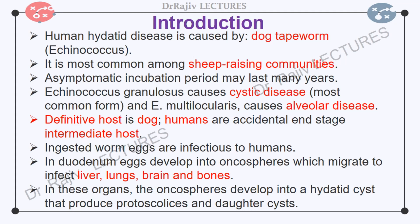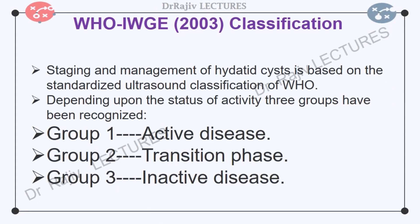Hydatid disease is most common in sheep-raising areas and among sheep-rearing communities where dogs have access to infected dead bodies of sheep. At present, the staging and management of hydatid cysts is based on the standardized ultrasound classification of the WHO Informal Working Group on Echinococcus. Depending upon the status of activity of the cysts, three groups have been recognized.